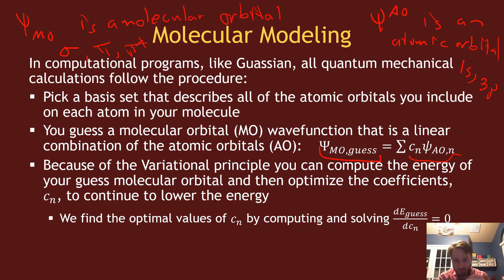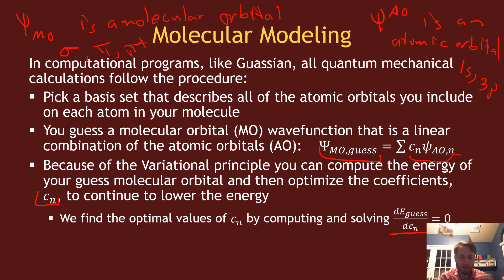Using this LCAO approximation and the variational principle, we minimize the energy with respect to the coefficients cₙ to find the optimal set of atomic orbitals that best construct the molecular orbitals for our molecule. We solve this by minimizing the energy — just like finding the minimum of any function by taking the derivative, setting it equal to zero, and solving for the optimal linear combination of atomic orbitals.